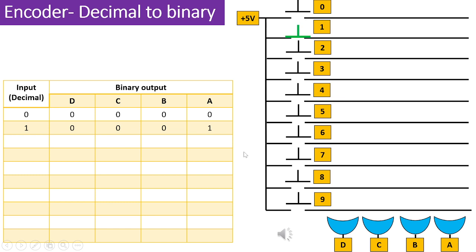When switch 1 is pressed, it activates the line on the opposite side of the switch, transmitting a logic 1. However, as the binary representation of decimal 1 is 0001 in a 4-bit format, the OR gate with its output labeled as input A is connected to the switch marked as 1. Consequently, when switch number 1 is pressed, the output changes to 0001.